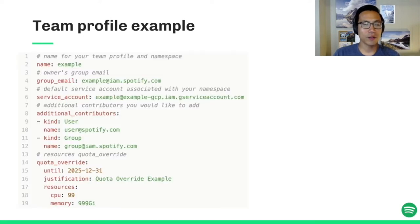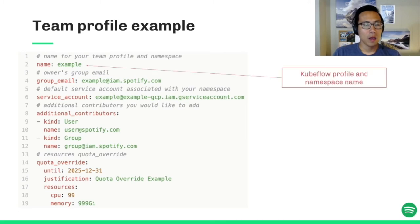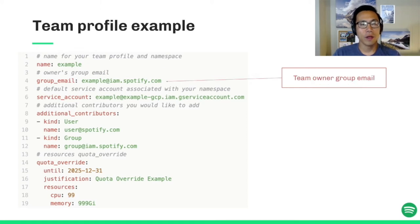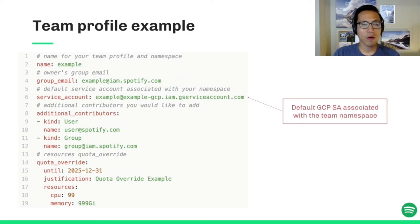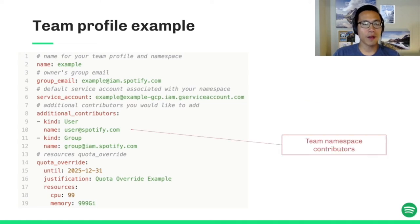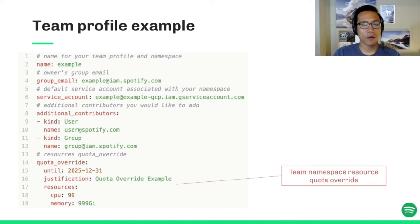Let's take a look at an actual team profile example. The name field defines the desired name for the team profile and the namespace. The group email field should be a group email for the team that owns the profile. The profile also requires a GCP service account to access datasets and GCP resources from its namespace, and it's bonded with a Kubernetes service account through GKE Workload Identity. The contributor field defines a list of additional users that the team would like to give access to — they can be individuals or groups. The resource quota override field allows the team to override the default resource quota defined by the platform team, subject to administrator approval.